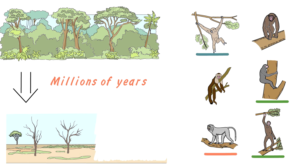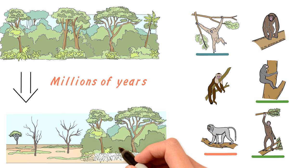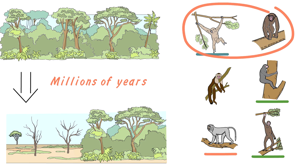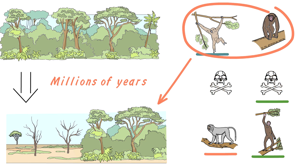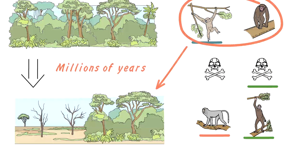All the apes that managed to survive had a choice to make. Option number one, the most enjoyable one, stay in the remaining forests. Option number two, the most unpromising one, go extinct. Option number three, the most exciting one.